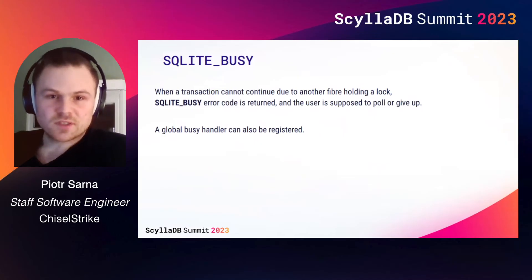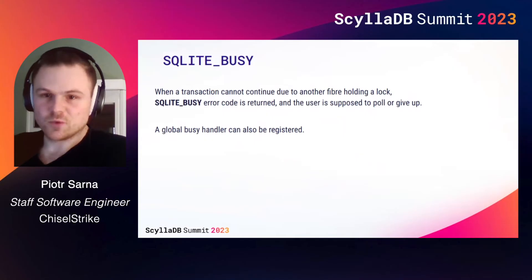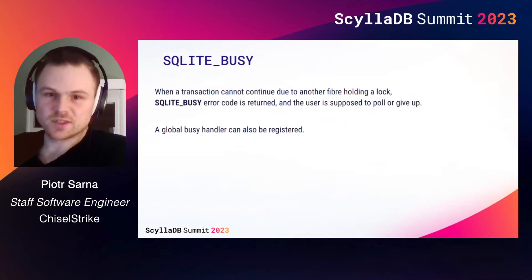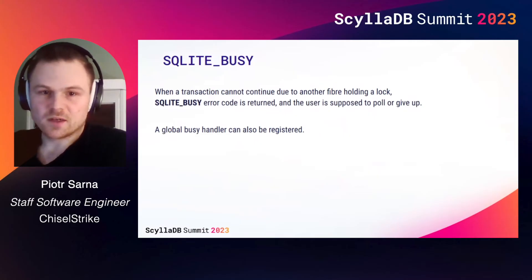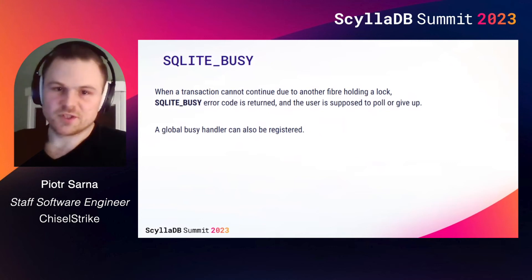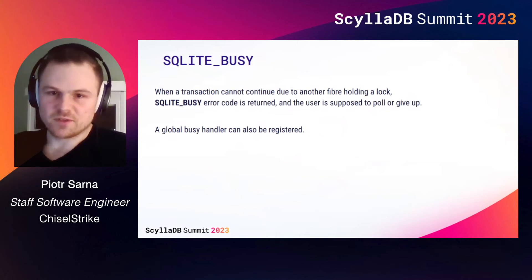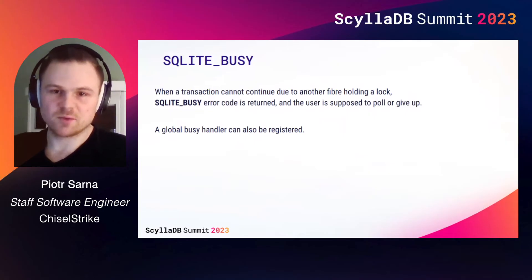SQLite also has an interesting way of dealing with transaction conflicts — the decision is pushed to the user. Transactions don't block; they return a special error code, SQLITE_BUSY, and give control back to the user. Alternatively, users can register their own callbacks which define how to react when it's not possible to obtain a lock. It can be a simple busy timeout or any kind of complex logic that users implement themselves.